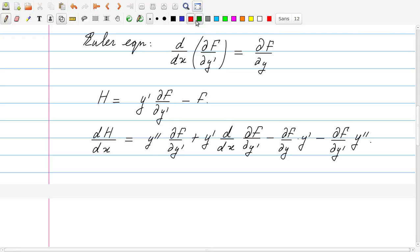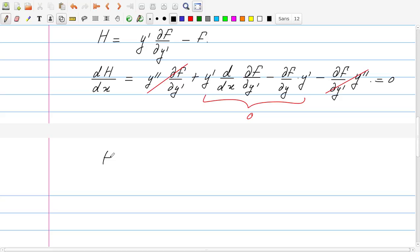Now we see that in this expression, the first term and the last term cancel. And the same holds for the second and third term, because if we use the Euler equation, we see that this is just y' times the left-hand side of the Euler equation minus the right-hand side of the Euler equation. So these two are 0, and therefore we find that this is simply 0. And that means that this quantity, the h, which you may have recognized as the Hamiltonian, is a conserved quantity. And so we can indeed now use the fact that h is constant, and that's y' df/dy' minus f. And this is a first-order differential equation.